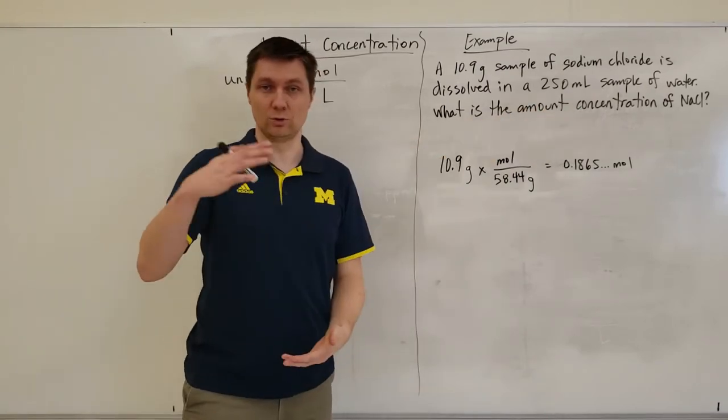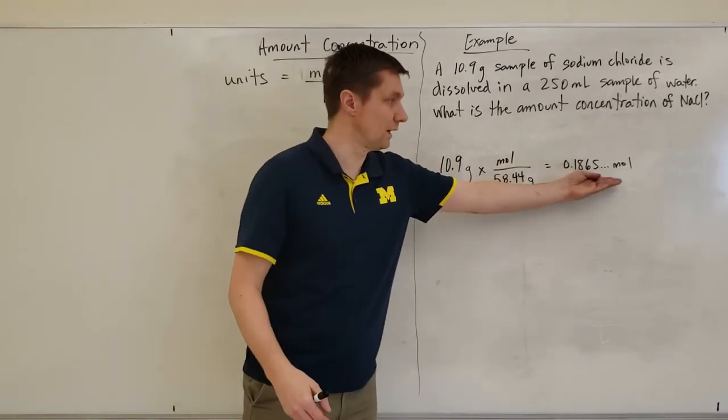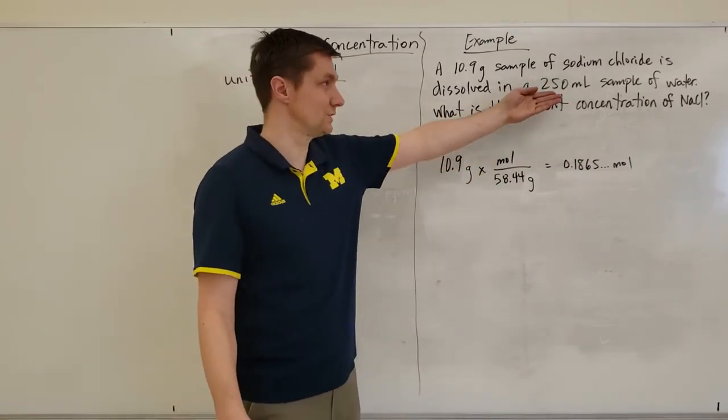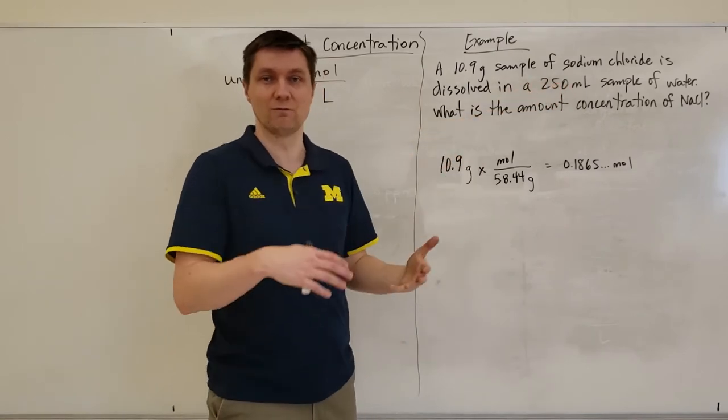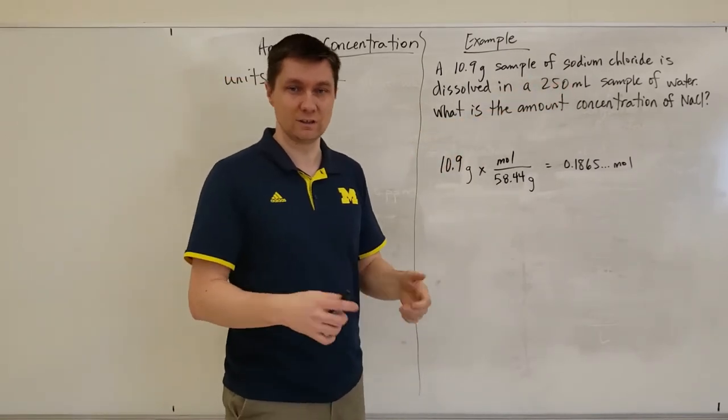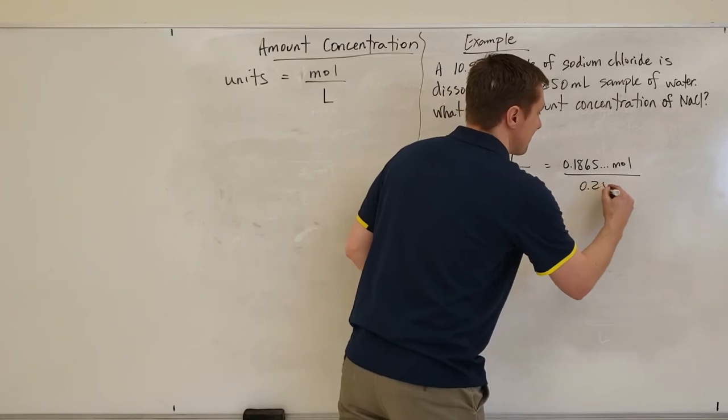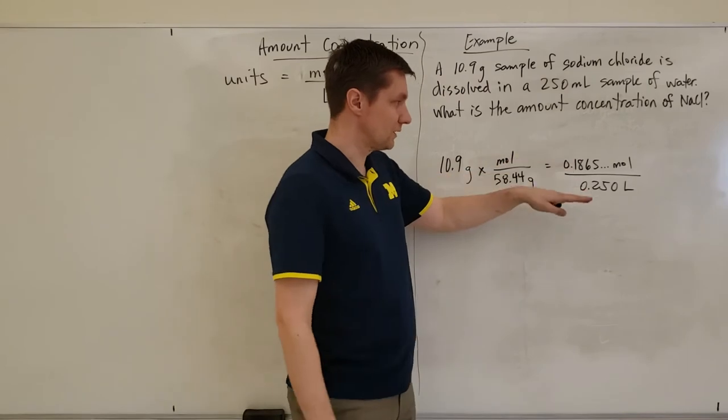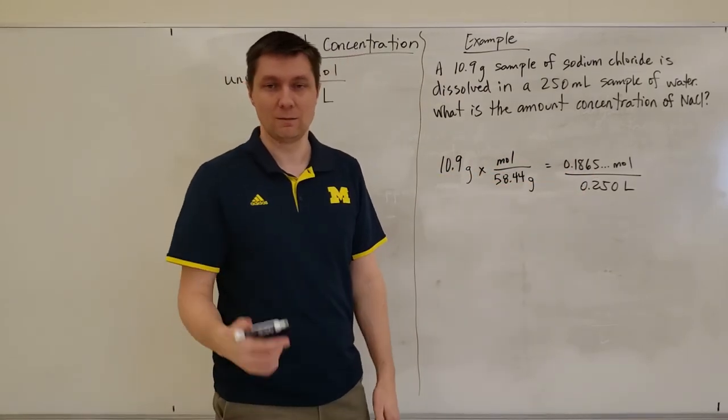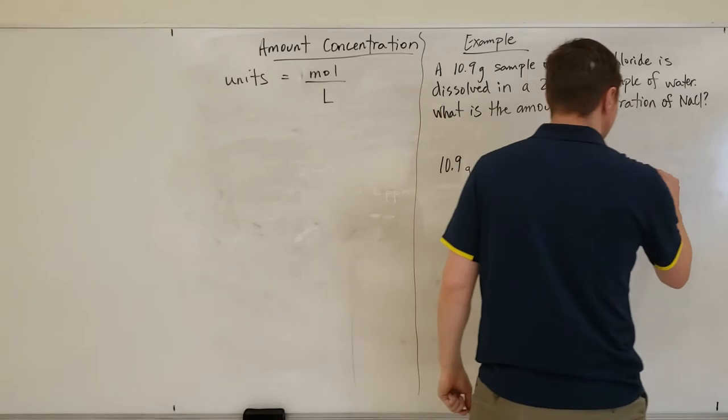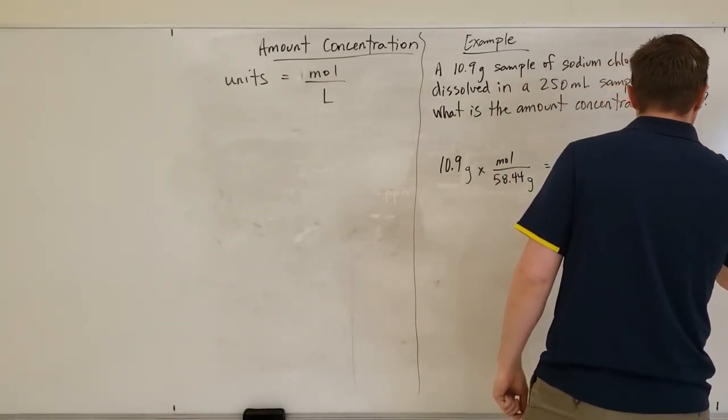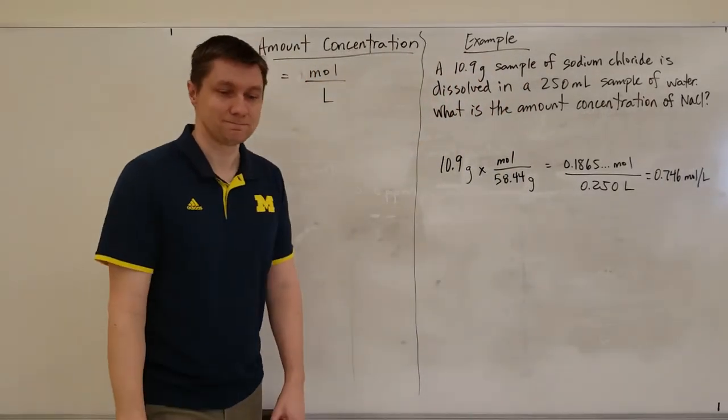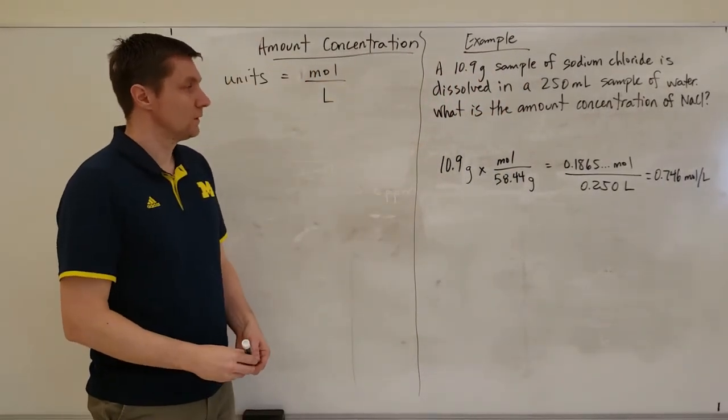Now it's asking for amount concentration which is moles per liter. I've got moles now, so now I just have to take my volume, make sure it's expressed in liters. This is a little tricky—it's expressed in milliliters, so I just have to convert that into units of liters. Then I divide the two together, this number divided by that number, and I get my number in moles per liter. There's my answer.